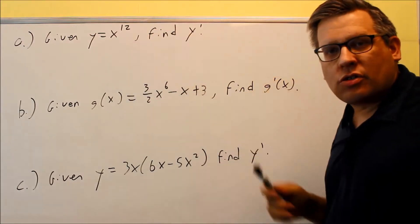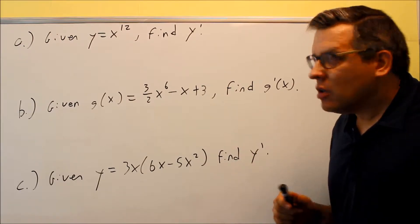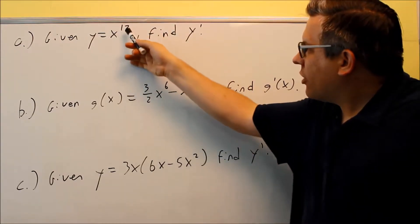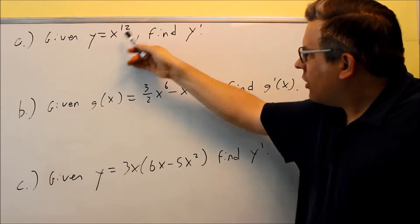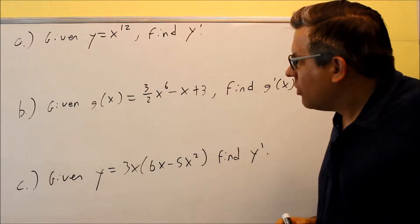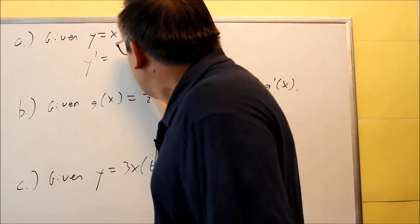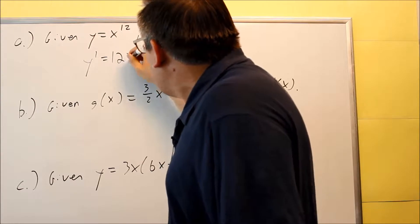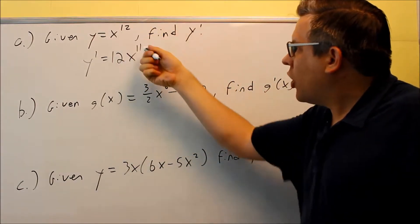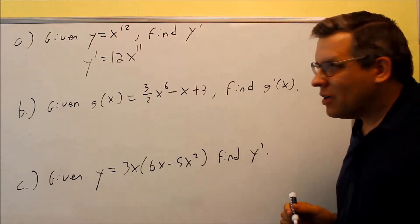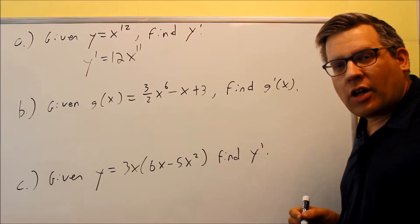Anytime you see x raised to a certain power, you can apply the power rule. The power rule means that you're going to take this power here, this is going to be your n, n comes down, and then you subtract 1 from your original power. So if I want to do y prime, it means that 12 is going to come down, I have my x, and then I'm just going to subtract 1 from my original power of 12, so take it down to 11. And that's it. That's all you have to do. There's only one term. That would be your final answer.